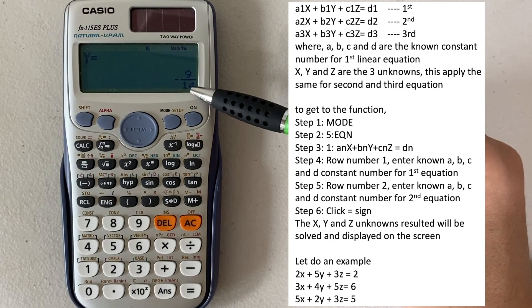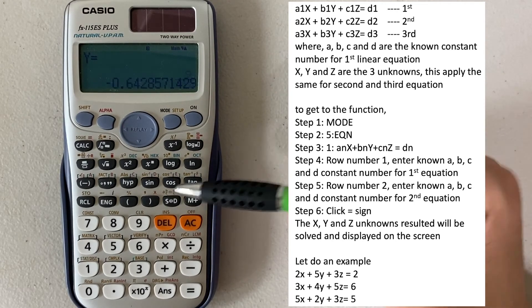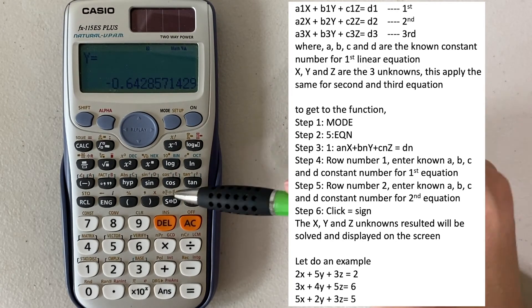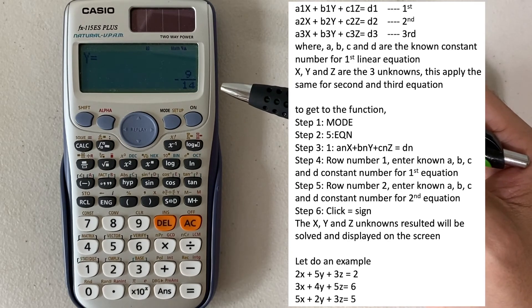So how about Y? Y is minus 9 over 14. The decimal is minus 0.64. Going back to fraction, 9 over 14.